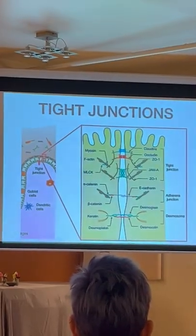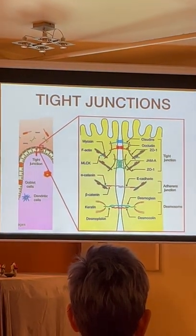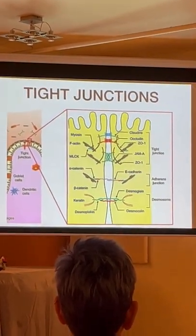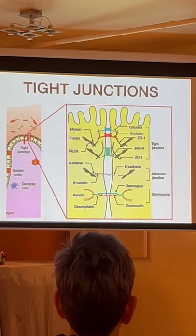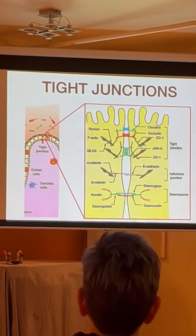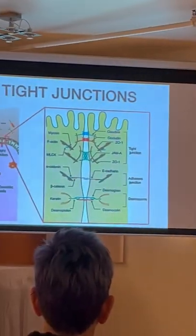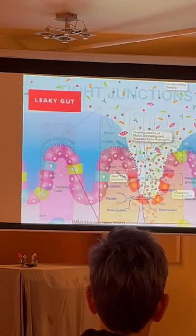And here is the more complicated look. So as you can see here, we've got quite a few tight junctions, and it's incredible how there's so many gates there that we still are able to open a lot of them up by some of the foods we eat.